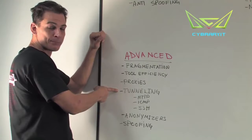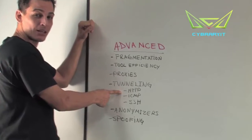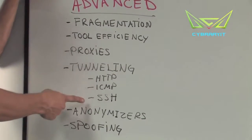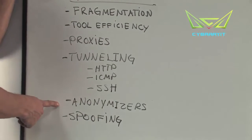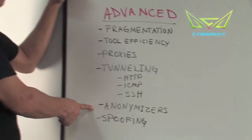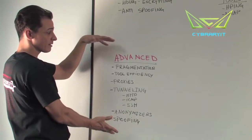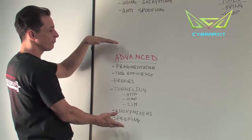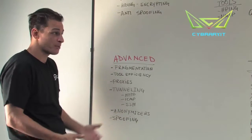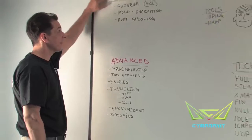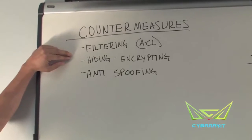Other advanced techniques include tunneling or encapsulating our traffic — common examples are HTTP tunneling, ICMP tunneling, or encrypting traffic while tunneling using SSH. We can also use anonymizing tools, public websites for anonymity, or spoof our source addresses. Between you and your target, there's not much that can stop these techniques unless the target starts filtering access and using access control lists to limit what an attacker can see.